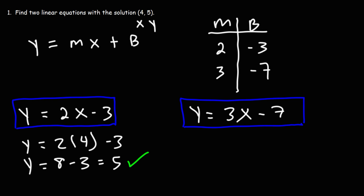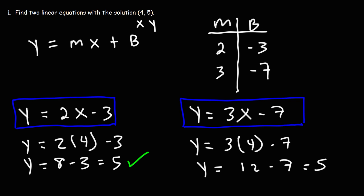For the next one, I'll replace x with 4 and expect y to equal 5. 3 times 4 is 12, and 12 minus 7 is 5 — so that works as well.